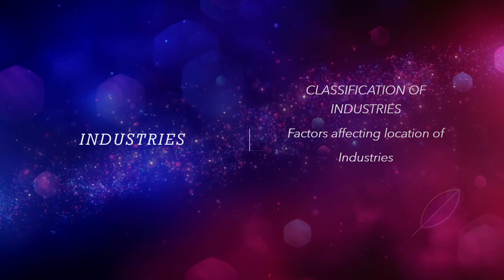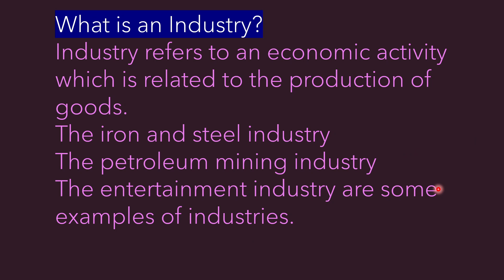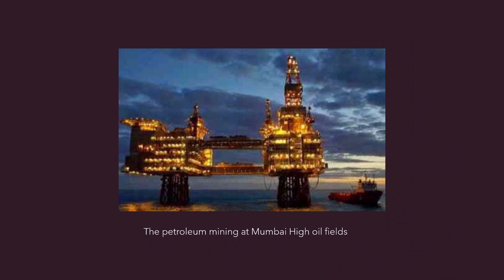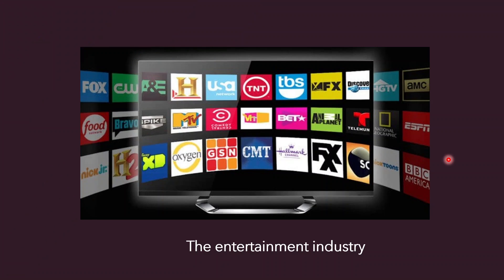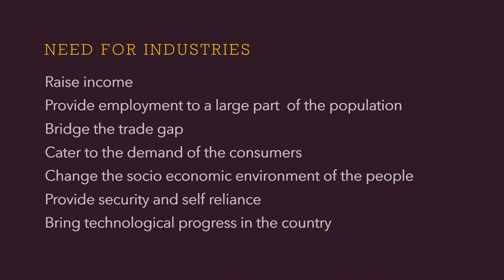Let us first understand what is an industry. An industry refers to an economic activity which is related to the production of goods. The iron and steel industry, the petroleum mining industry, and the entertainment industry are some of the examples of industries.